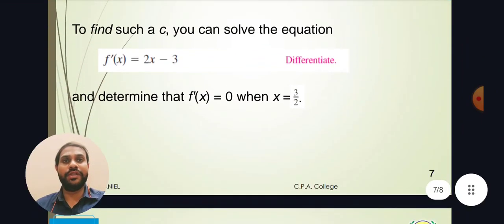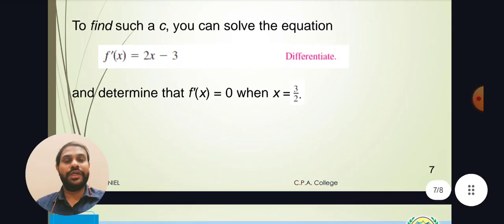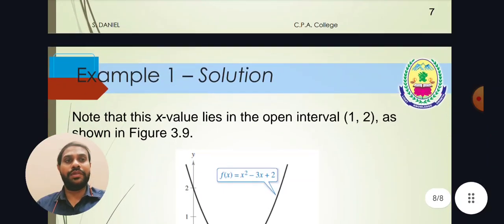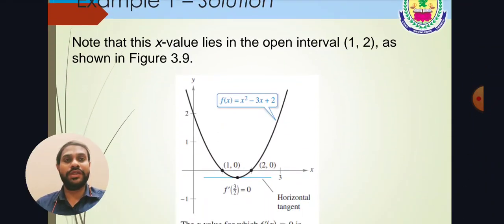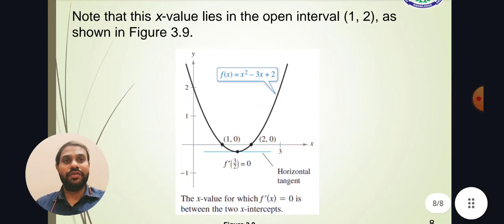Now we find f'(x): differentiating gives f'(x) = 2x − 3. Setting f'(x) = 0 and solving, we get x = 3/2. So c = 3/2. Mapping this to the theorem: for the given function, the curve crosses the x-axis, reaches into the second region of the graph, and if we draw the tangent to the extremum of the curve it touches the curve at that point. At x = 3/2, that is the horizontal tangent — the x-value for which f'(x) = 0 lies between the two x-intercepts. This is the graphical interpretation for the given example.